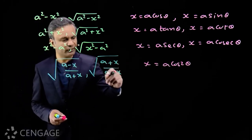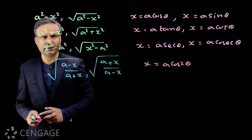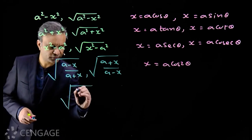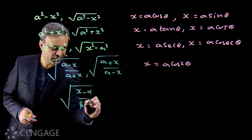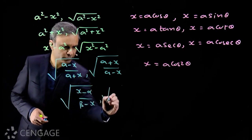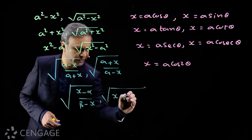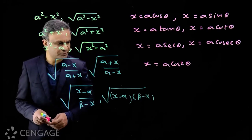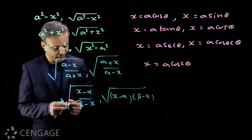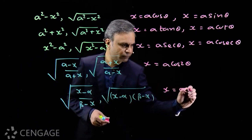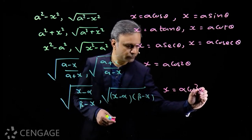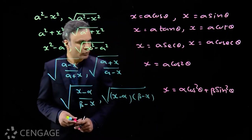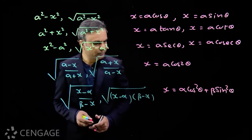Here we will have cosθ. Then we have the expression √((x - α)(β - x)). This is the most typical expression for substitution. Here we put x = α cos²θ + β sin²θ, or α sin²θ + β cos²θ.